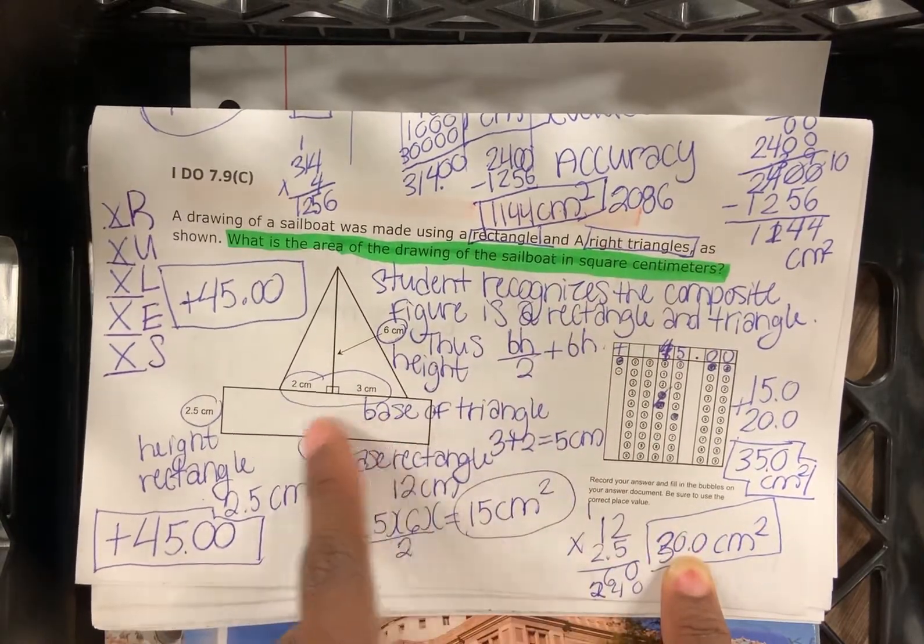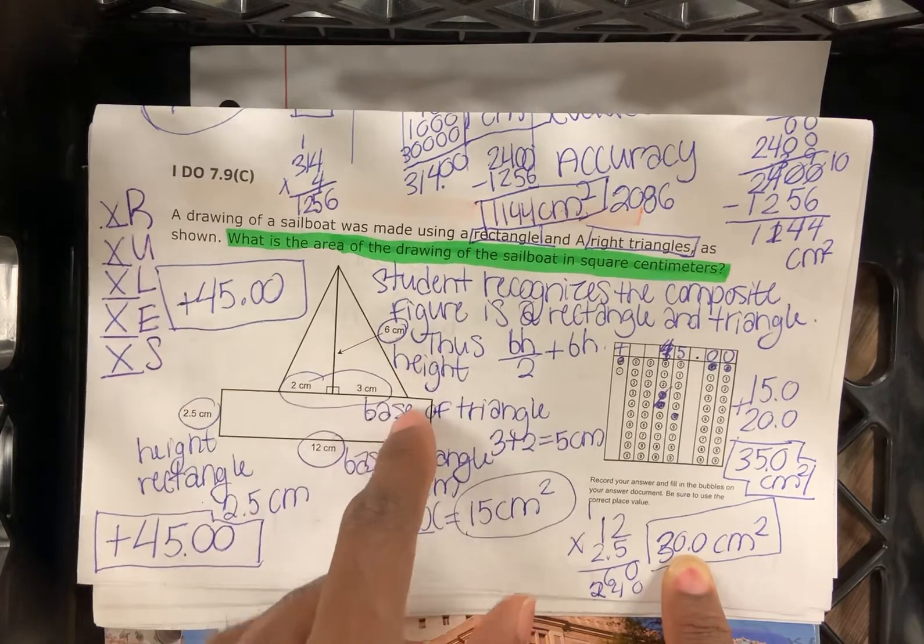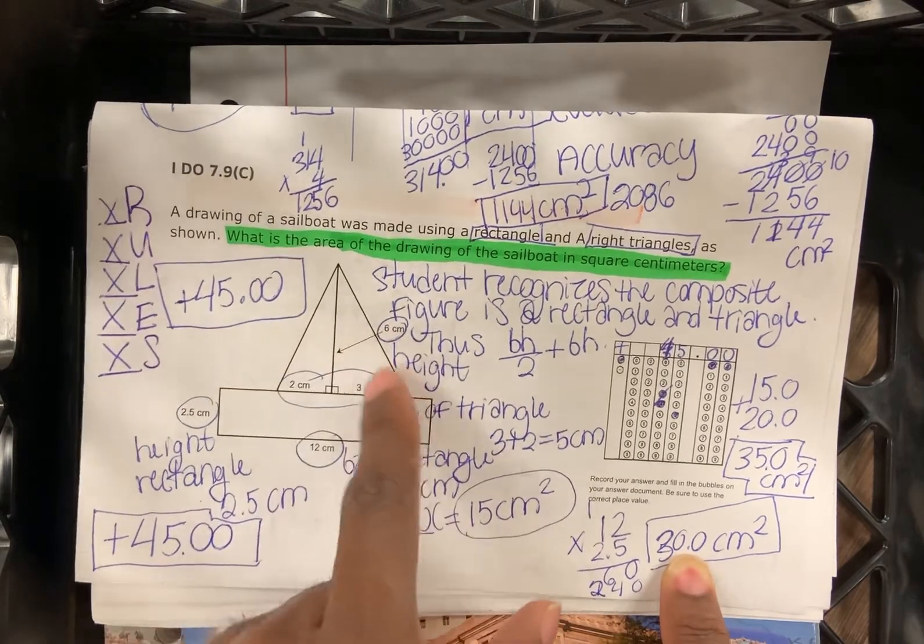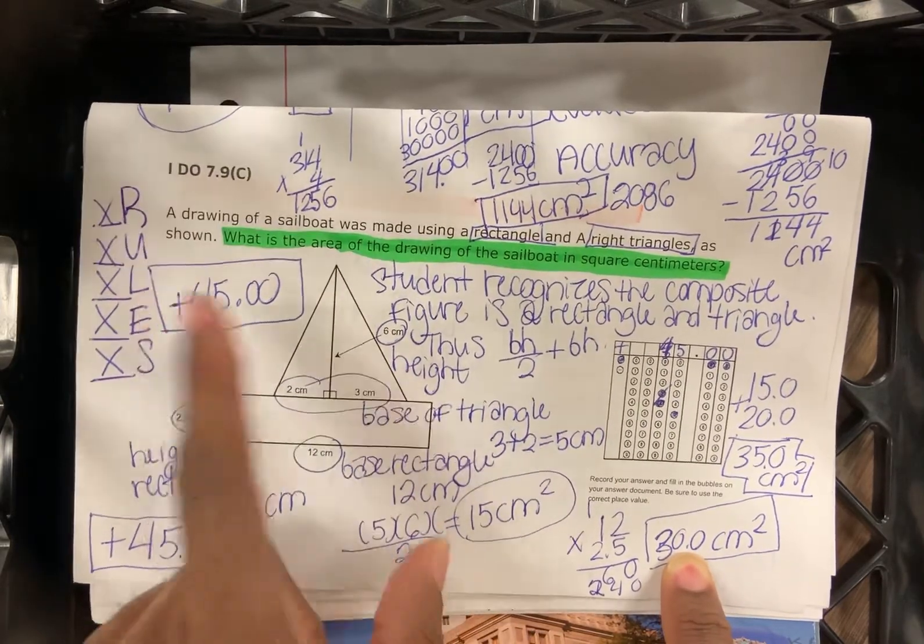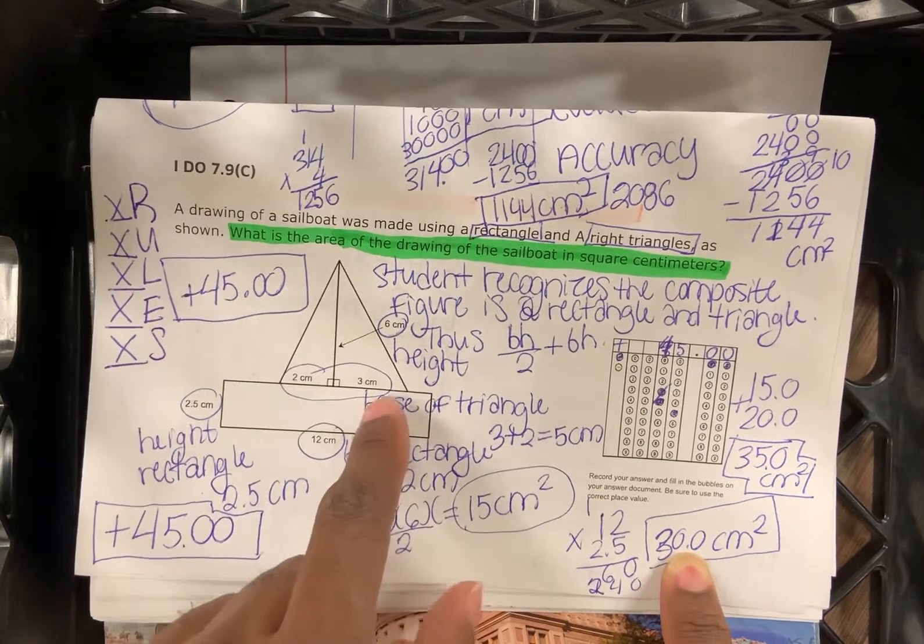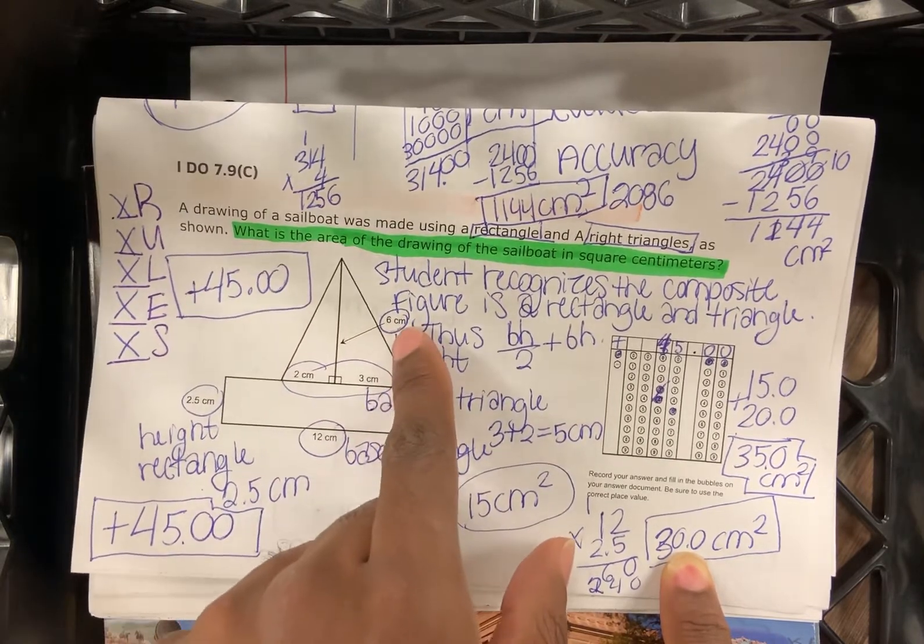All right. So if you look at it, there's two shapes. There's a triangle and there's a rectangle. The base of the triangle is going to be three plus two, which would be five. The height of the triangle is going to be six.